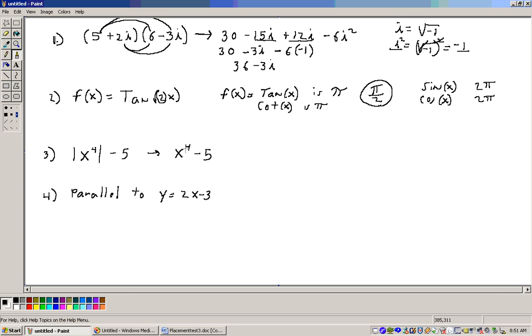Okay, problem 4 says which of the following, and it gives you about five choices, and usually there's five choices per problem on this. Which of the following is parallel to this equation right here, the graph of this equation? Well, the slope of this equation is 2. And so therefore parallel lines have the same slope. So we're looking for an equation whose slope is also 2. Now if we check the choices here.